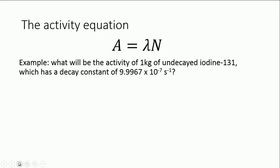Let's have a little go at using that. Here's a sample question for you. What will be the activity of one kilogram of undecayed iodine-131, which has a decay constant of 9.9967 times 10 to the minus 7 per second? You tend to find these very, very small numbers for decay constants. This one's about in the middle of the range, I would say. I put this question in because it's more like an exam question than just basically using this equation. You have to actually do quite a lot to this before you can actually plug it into this equation, because you need to find N.